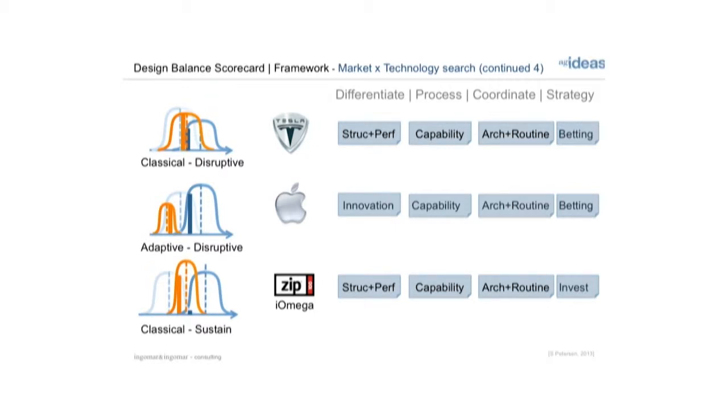Apple was basically betting on innovation capability, building capabilities in how to make phones — they hadn't made phones before. New architecture routines, basically how do you navigate the phone world with people selling phones and supplying phone services. It was a betting strategy that people would want iPhones. When Nokia saw the first iPhone a couple of days after it came out, they just couldn't see a market for it. They didn't see the positive bet in that situation, while Apple did.